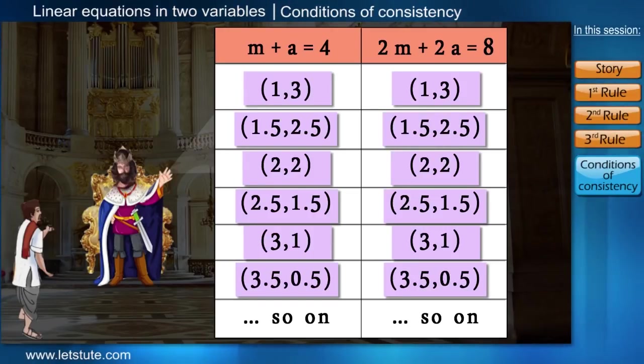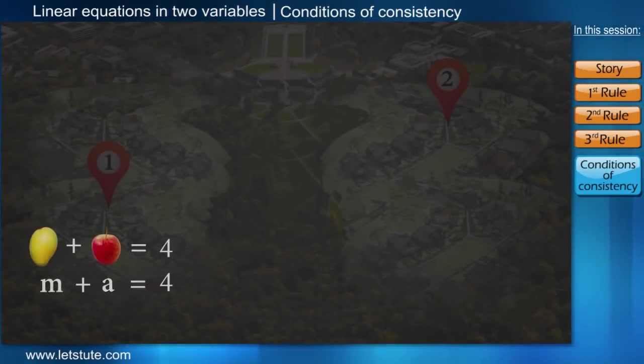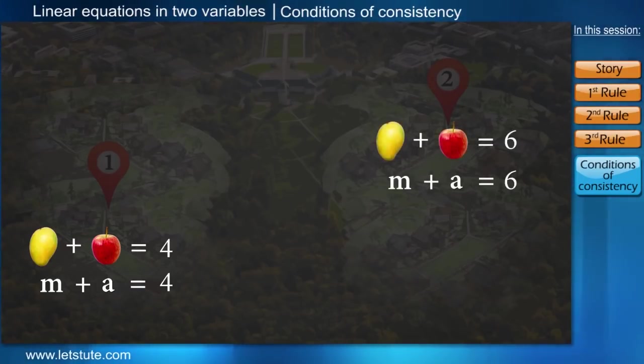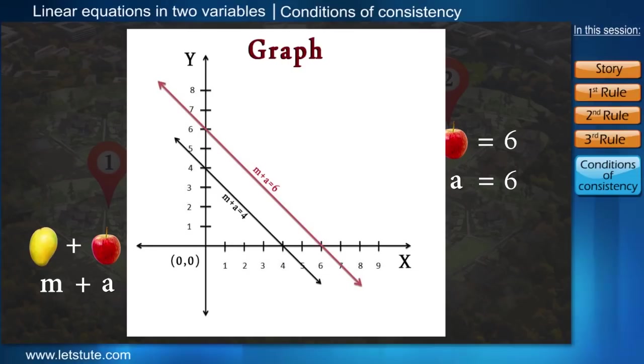Finally, that person suggested that if we keep the price for the first market as m plus a equal to 4 and that for the second market as m plus a equal to 6, then there won't be any replication in the prices. He also showed it graphically that lines were parallel and parallel lines never intersect. So it will not have any common point.